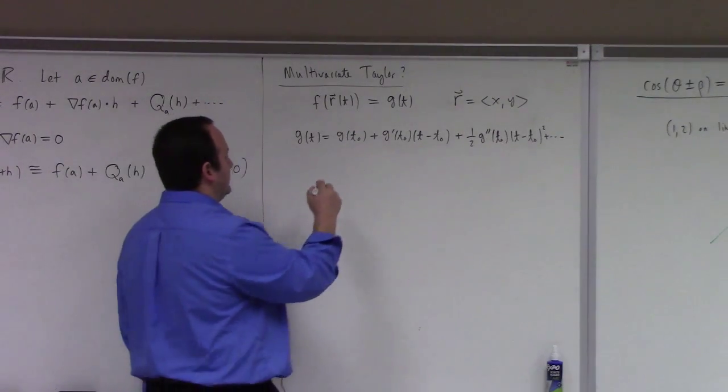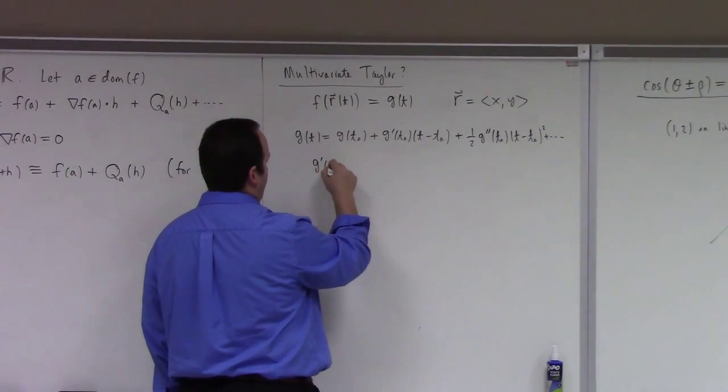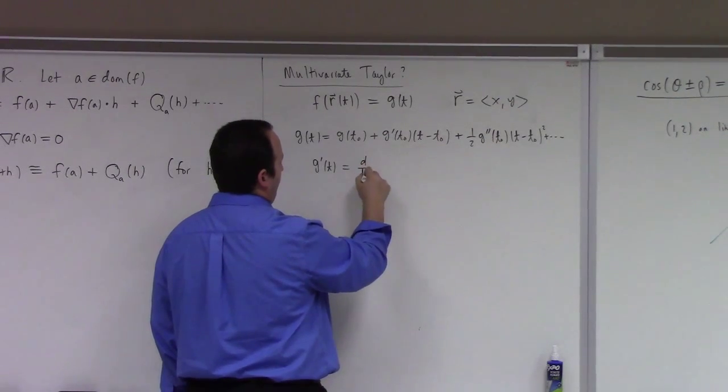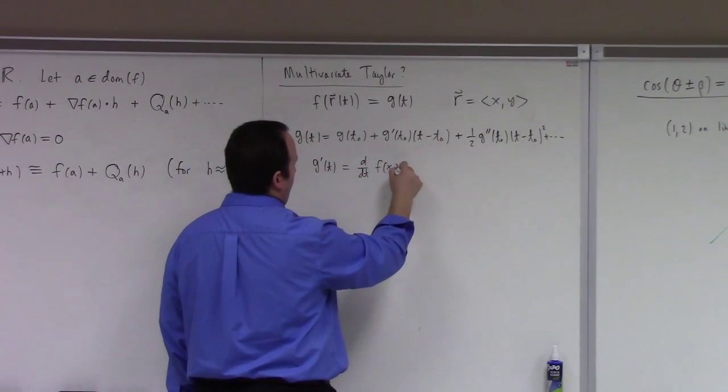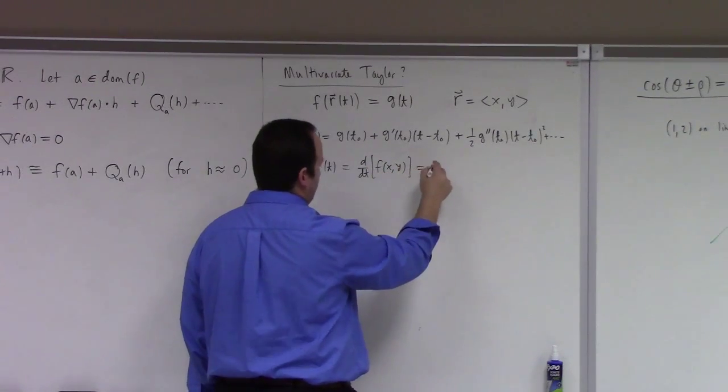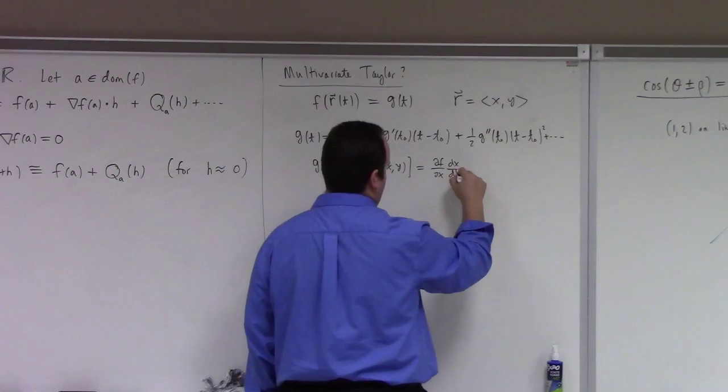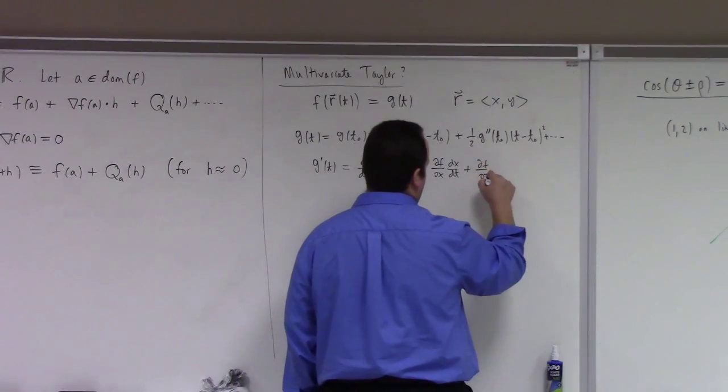Like, what's G prime? Yeah, it's exactly, it's partial F partial X, DX DT, right? Partial F partial Y, DY DT.